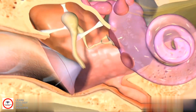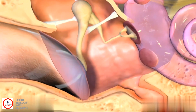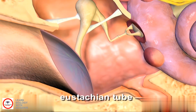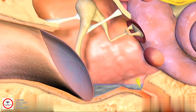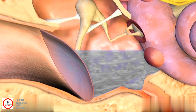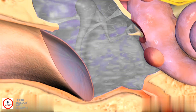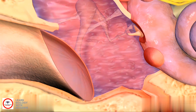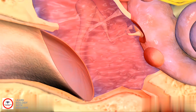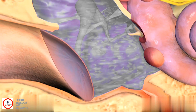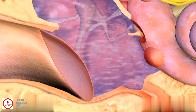An ear infection occurs in the middle ear. Normally, fluid in the middle ear drains down the eustachian tube and into the back of the throat. During an ear infection, the middle ear produces fluid that cannot be properly drained through the eustachian tube. The buildup of fluid can cause pain and temporary hearing loss, and it may lead to a middle ear infection.